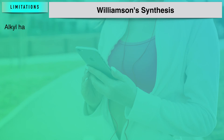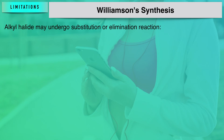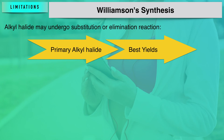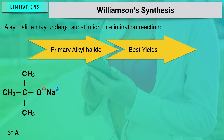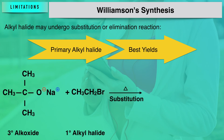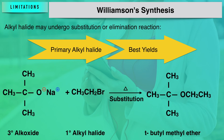Since Williamson synthesis proceeds through an SN2 mechanism, the best yields of unsymmetrical ethers are obtained when the alkyl halides are primary, as primary alkyl halides are more susceptible to SN2 reactions. The alkoxides can be primary, secondary, or tertiary. For example, a tertiary alkoxide interacting with a primary alkyl halide on heating undergoes normal SN2 substitution, giving tertiary butyl methyl ether.